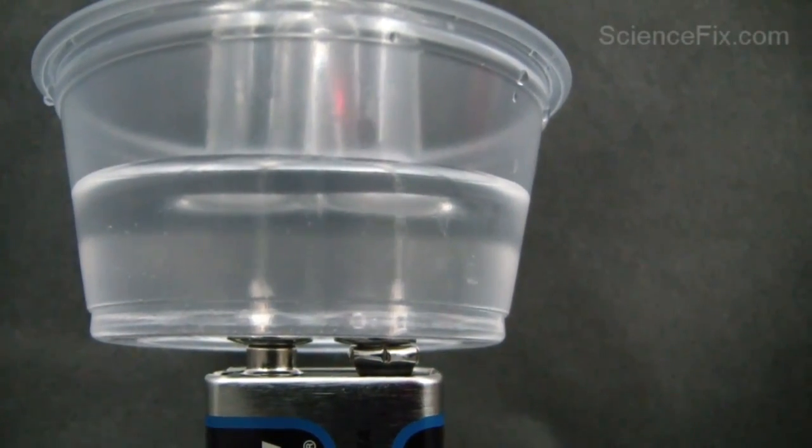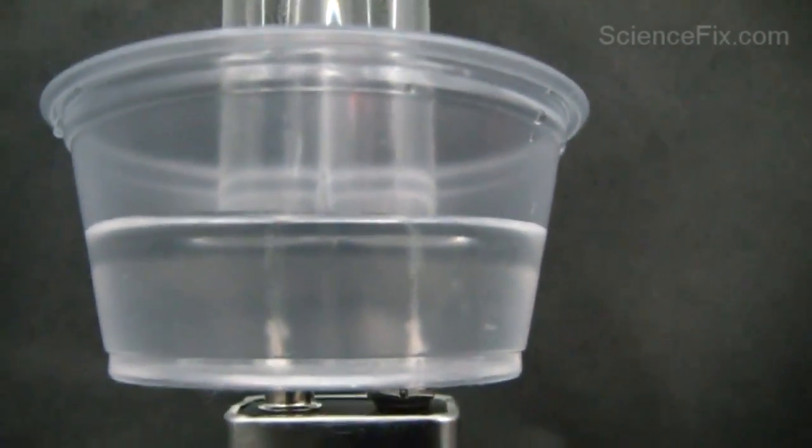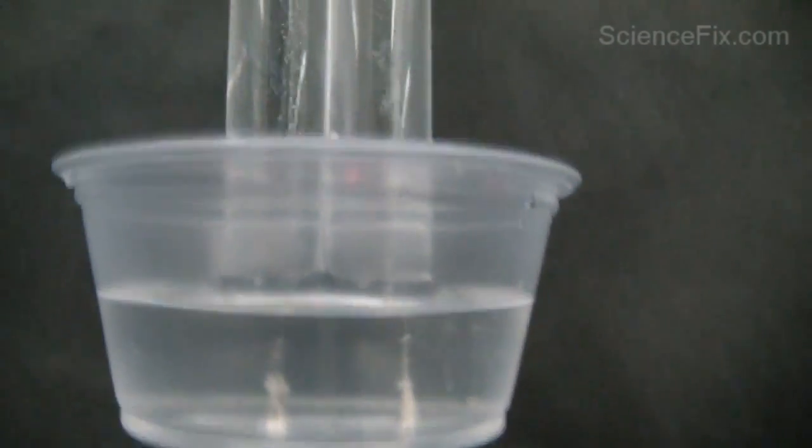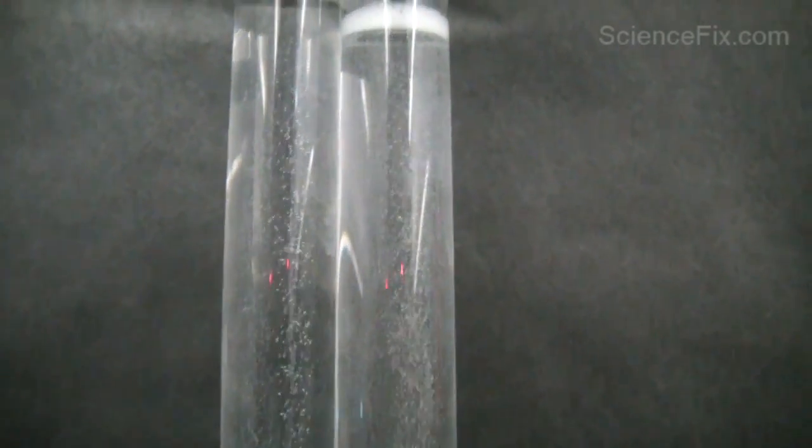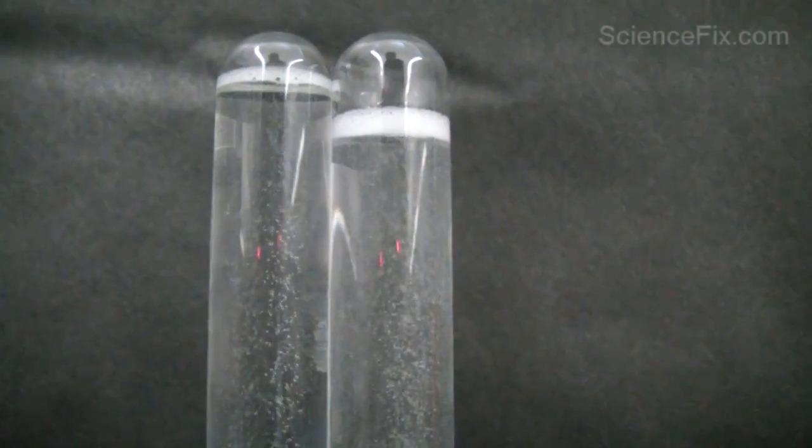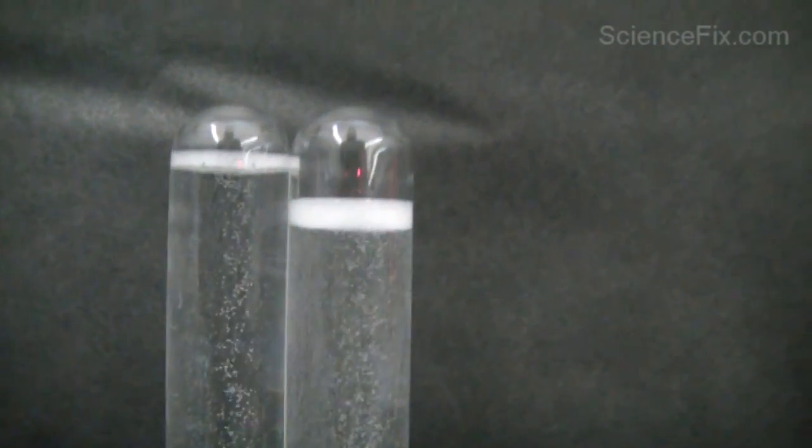Both gases are going to flow up through the test tubes, one gas in each test tube. How do you know which one is which? Well, if you take a look at the amount of gas in each test tube, there's going to be twice as much hydrogen gas as oxygen gas.